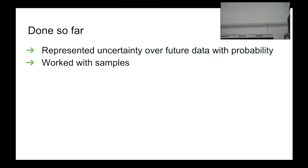What have we done so far? We've represented uncertainty about future data with probability, and we've worked with samples — something you almost always do in modern Bayesian computation. But we haven't really done anything Bayesian yet.